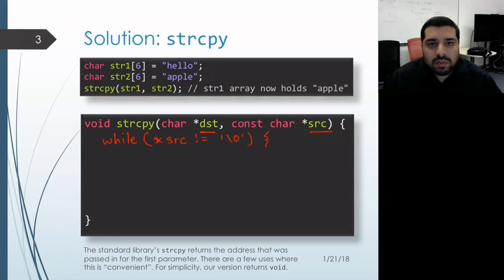We can compare directly against the null character, or we can actually leave out that comparison entirely because a null character has a false truth value. So when dereferencing source gets us to the null character, that will become false and then the loop will exit. Either way is fine.